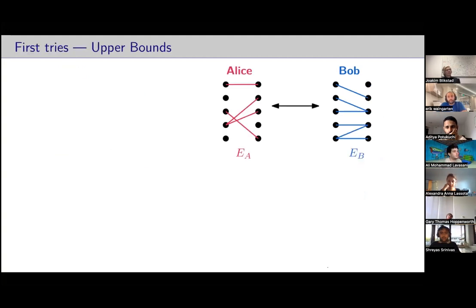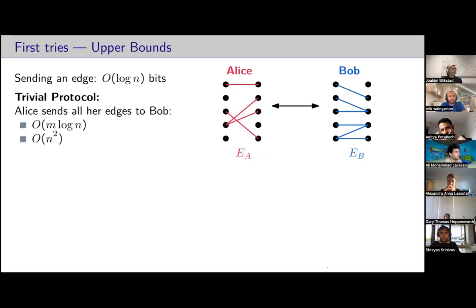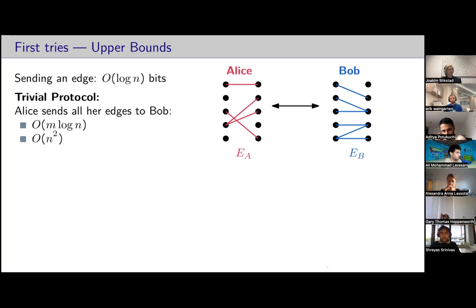A very trivial observation is that sending a single edge needs log n bits — you send the label of the left and right incident vertex. A trivial protocol is for Alice to take all her edges and send them in a single message to Bob, which takes m log n bits. For very dense graphs, you can do it in n² bits by sending the indicator vector of which edges exist. Can we do better? Linear in m is trivial, so we want something sublinear in the number of edges.